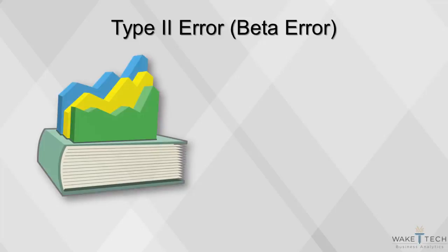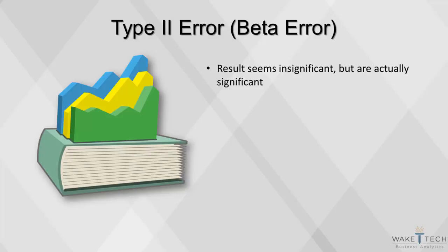On the other hand, a type 2 error occurs when results seem insignificant, but in fact there was something significant going on. Type 2 errors are like a false negative on a drug test. They occur when the alternative hypothesis is true, but there's not enough evidence in the sample to reject the null hypothesis. This type of error is traditionally considered less important than a type 1 error, but it can lead to serious consequences in real situations.